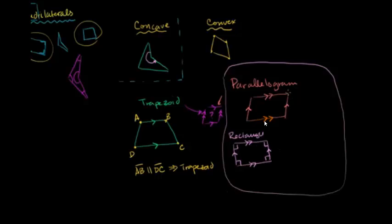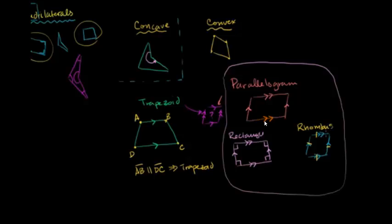If we have a parallelogram where we don't necessarily have four right angles, but the length of all the sides is equal, then we're dealing with a rhombus. It's a parallelogram where that side is parallel to that side and this side is parallel to that side, and all four sides have equal length. So all rhombi are parallelograms, all rectangles are parallelograms, but you cannot assume all parallelograms are rectangles or rhombi.